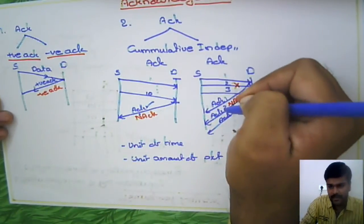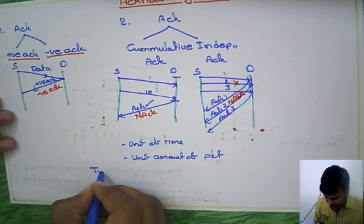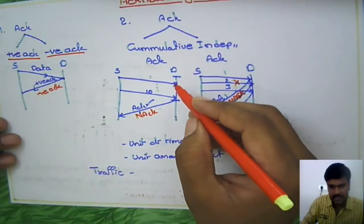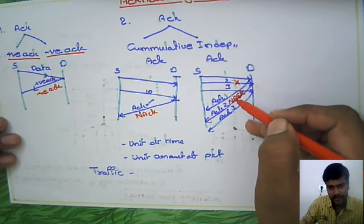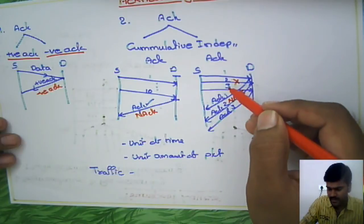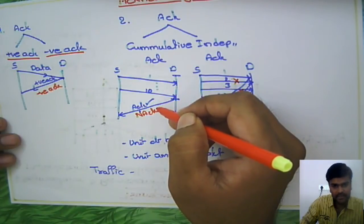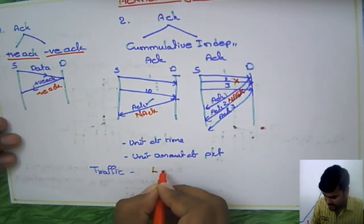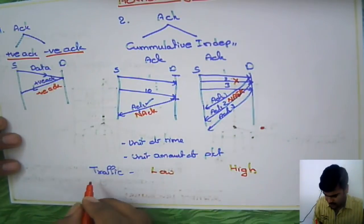Now let us look at the advantages and disadvantages of these two. In case of traffic, for cumulative acknowledgment, suppose you transmitted 10 packets — you give a single acknowledgment, so 11 packets total. In case of independent acknowledgment, 10 data packets plus 10 acknowledgments equals 20 packets altogether. So about half the packets are reduced with cumulative acknowledgment, meaning network traffic in cumulative acknowledgment is low, while in independent acknowledgment it is obviously high.